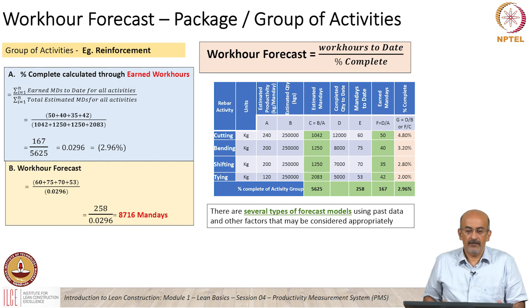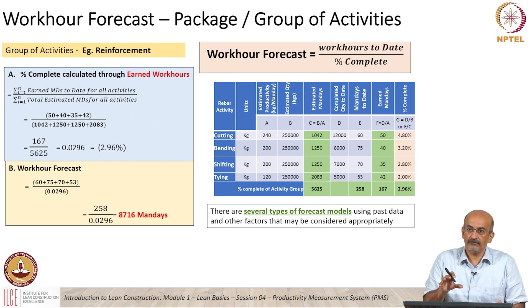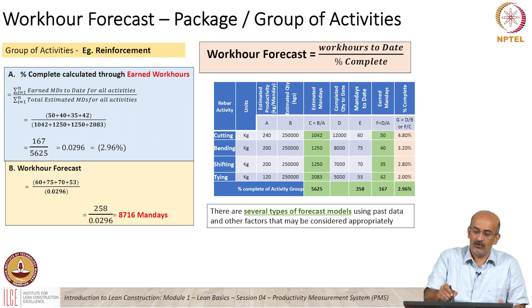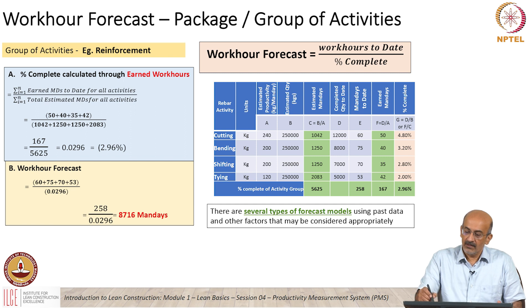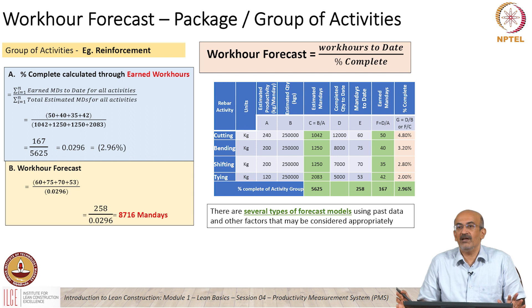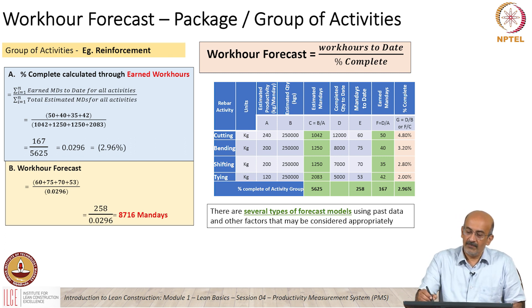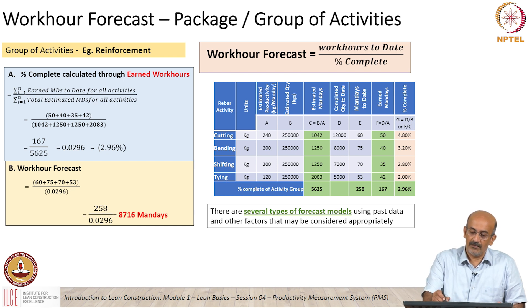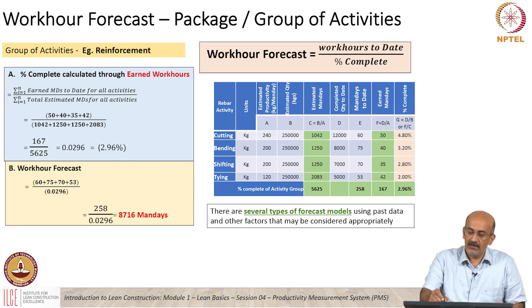Now we go into a group of activities. Instead of just tying, let us assume we are measuring percentage complete of reinforcement as a group of activities. While the units are still kilograms, I cannot add up the quantity of cut, bend, shift, and tie and divide by the total — that would not give a right view of percentage complete. So what we do here is take the quantity completed to date. We have estimated productivity in kg per man-day for each activity — cutting, bending, shifting, and tying. The estimated quantity for all is the same because the total quantity goes through all of these steps. The estimated man days is based on the total estimated quantity and the productivity.